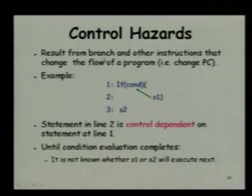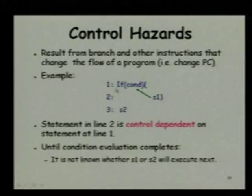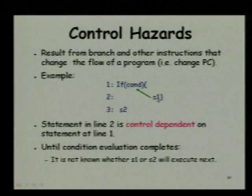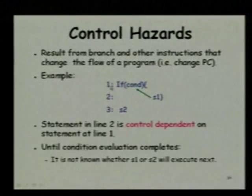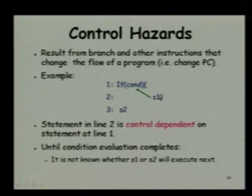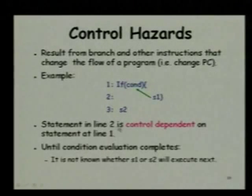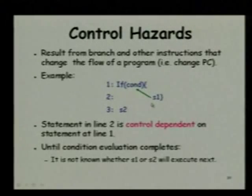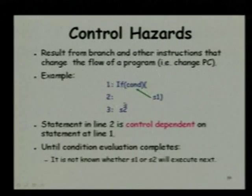The third type of hazard is the control hazard. This results from branch and other instructions that change the flow of a program. For example, depending on some condition, S1 is executed, otherwise S2 is executed. If we simultaneously start executing S1 while evaluating the condition, then we will have to flush the pipeline because S1 may not be required — it might be S2. S1 is control dependent on the condition statement. Until the condition is evaluated, we will not know which would execute next, S1 or S2.